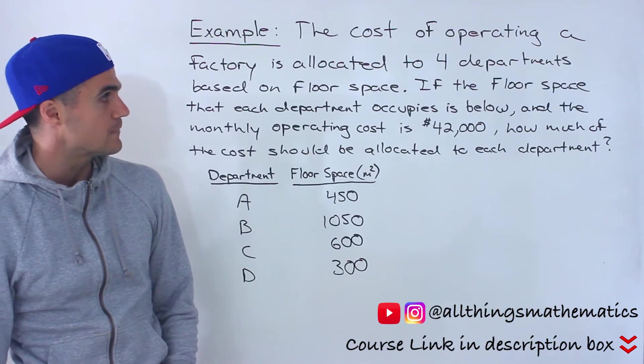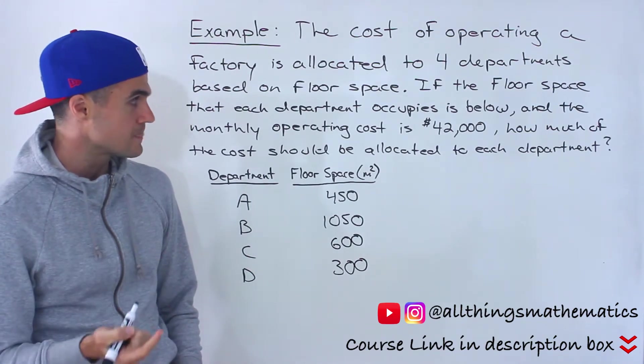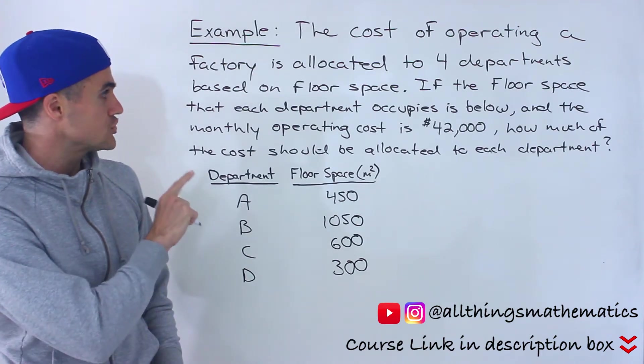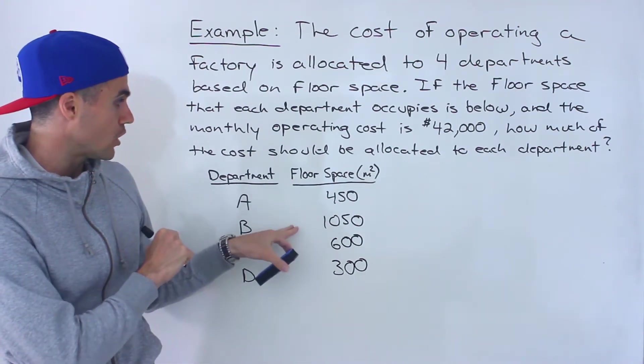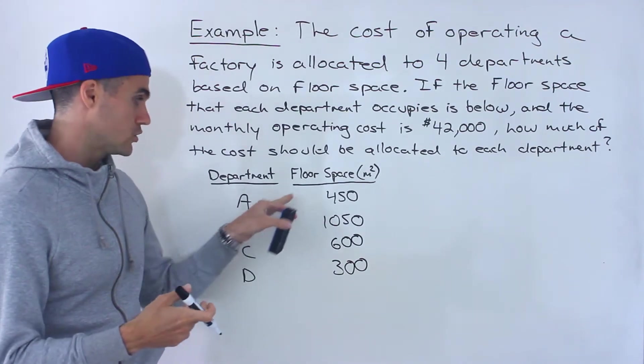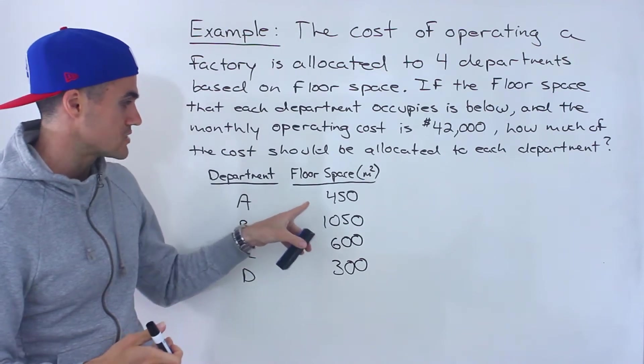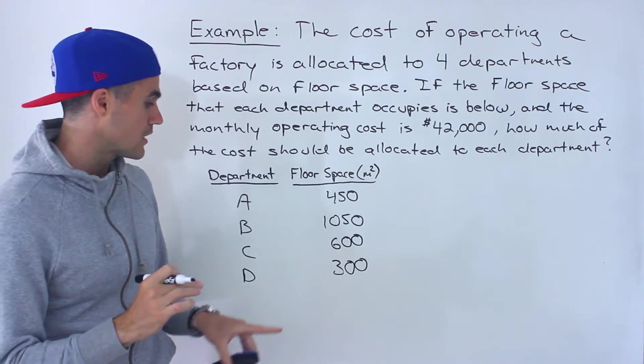We're told the cost of operating a factory is allocated to four departments based on floor space. If the floor space that each department occupies is below, so in this chart here, notice that Department A occupies 450 square meters of floor space, Department B occupies 1,050 square meters.